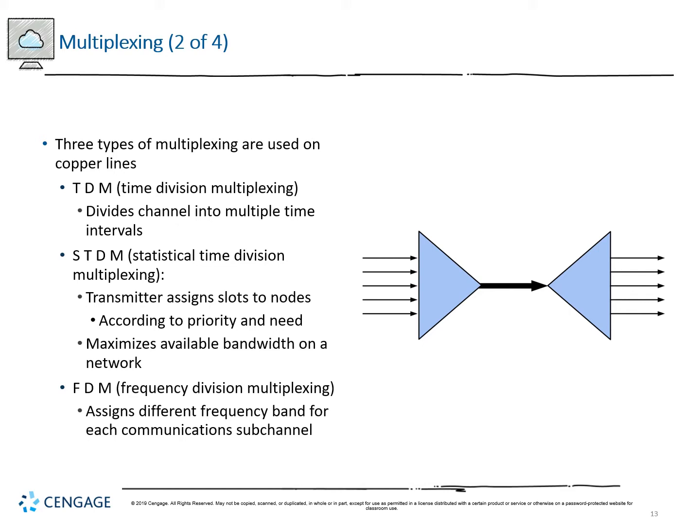The three types of multiplexing on copper lines are time division, statistical time division, and frequency division. Time division and statistical time division divide the channel into multiple time intervals — on a particular group of milliseconds it transmits signal for project A, then B, C, and D. Statistical time division assigns a slot to a node based on priority and need to maximize bandwidth, giving more bandwidth to a more critical process. Frequency division assigns a different frequency band for each communication sub-channel, based on frequency rather than time.